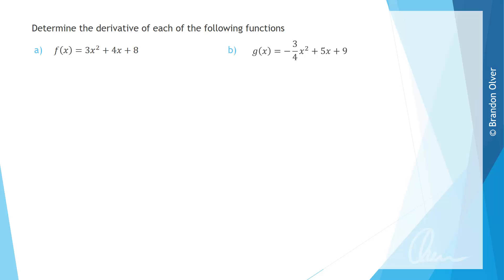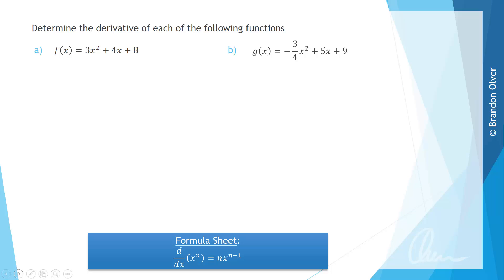Determine the derivative for each of the following functions. Before we get started, I'd like to remind you that on the formula sheet we have the derivative of x to the power of n is equal to n times x to the power of n minus 1. So essentially we take the power and multiply it out the front and then subtract 1 from the power.